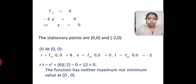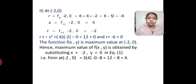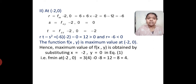rt minus s squared becomes 12, which is less than 0. Since the condition is less than 0, we know the function has neither maximum nor minimum value at (0, 0). Now let's check the second point at (-2, 0). The value of r at (-2, 0) is minus 6, the value of s is 0, and the value of t is minus 2. rt minus s squared becomes minus 6 times minus 2 minus 0, which is 12 and which is greater than 0, and the value of r is minus 6, which is less than 0. Since rt minus s squared is greater than 0 and r is less than 0, the function is maximum at (-2, 0).